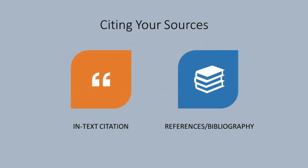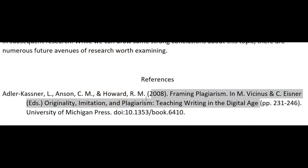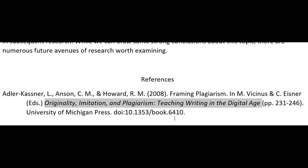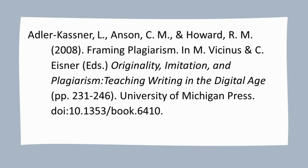The full information about the source will be included in the second element: the references. Here you will include all the relevant information about the source, including the author and year again, but also the title or chapter title, the journal name if applicable, the publisher, volume and issue numbers, page numbers, and more. This is meant to guide your reader to the original source. Here's the same source as it would be listed in an APA bibliography. Your reader can use this information to find a copy of the source for their own analysis or interpretation.